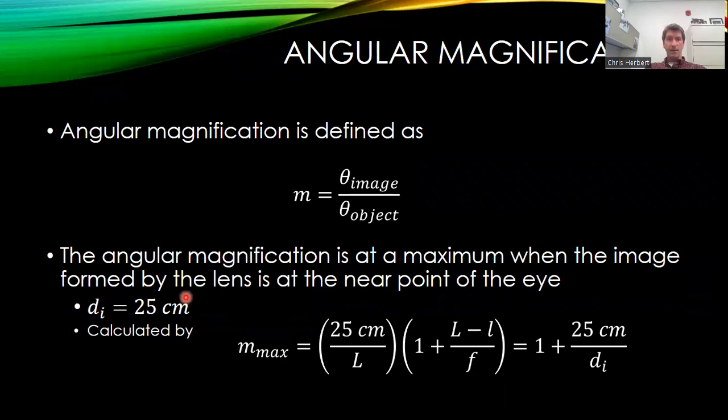And again, if I do the calculation and I say that my distance, my image distance is going to be 25 centimeters, I can come up with a maximum magnification for this magnifying glass as follows, where 1 plus 25 centimeters over the distance as my magnification.